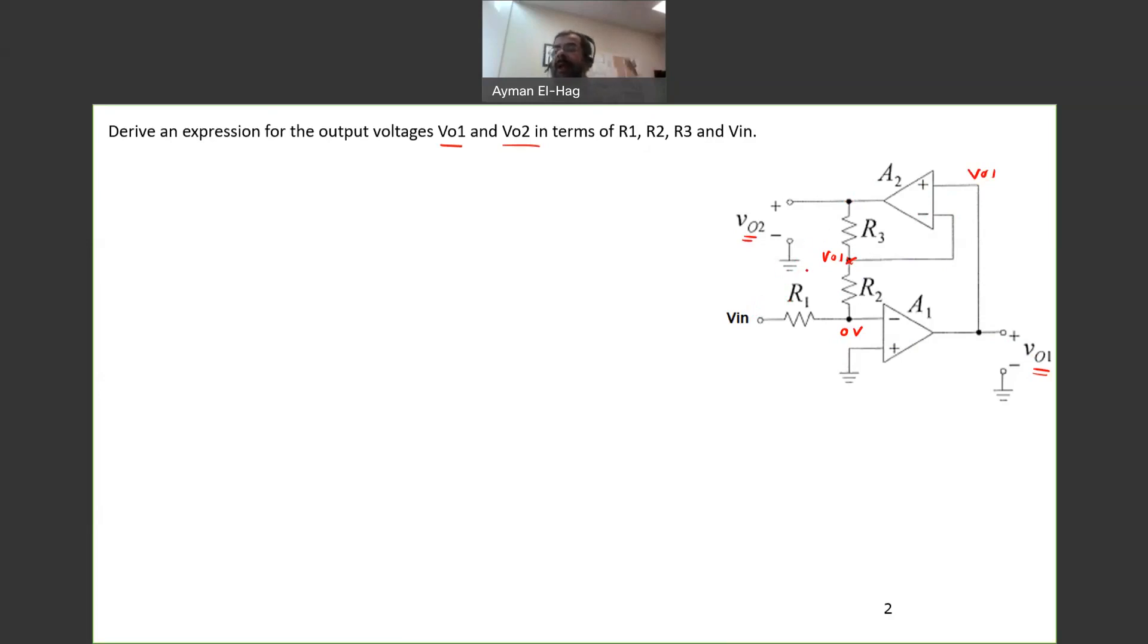Now, we will apply node analysis or KCL. So we will not apply KCL to this node. Why? Because this is an output node for op-amp 1. We will not apply KCL to this node because this is an output node for op-amp 2.